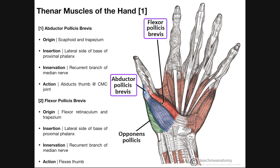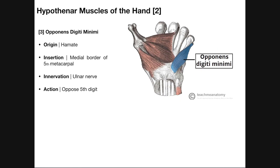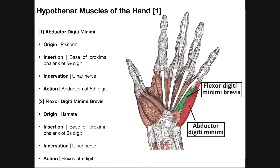Now we're going to look at what are called hypothenar muscles. Hypothenar muscles exist on the other side of the hand, so rather than controlling the thumb, hypothenar muscles are going to control the pinky, or the fifth digit, or the small finger. There are three of these, and all three are innervated by the ulnar nerve and they control movements of the pinky, which we're going to call from here on out the fifth digit, or digiti minimi. Digiti minimi is Latin for smallest digit, which in this case is the fifth digit.